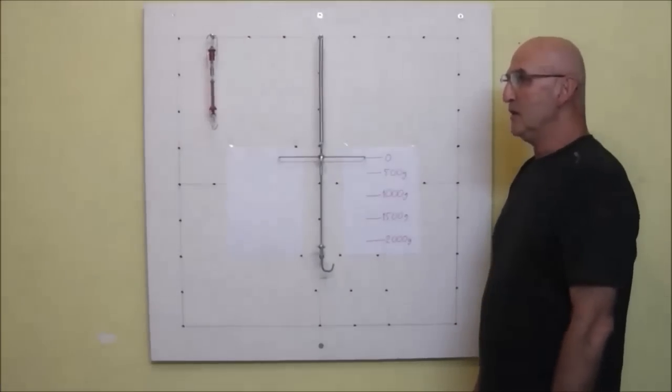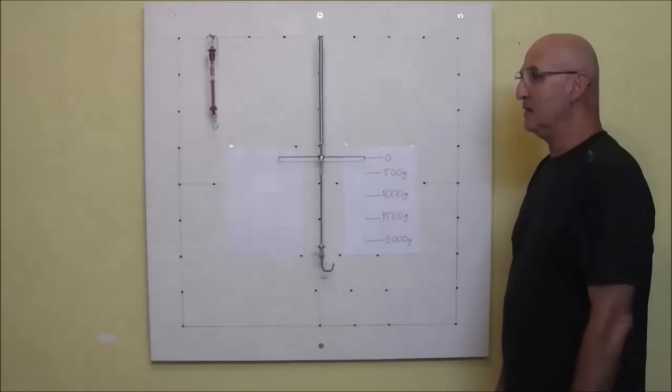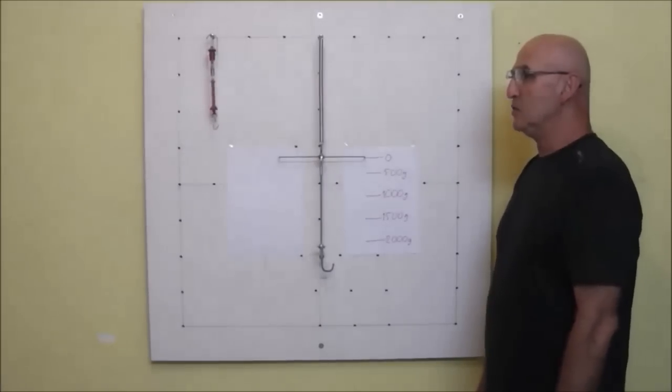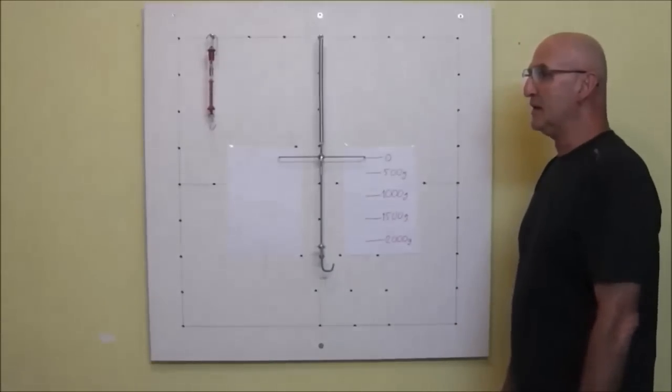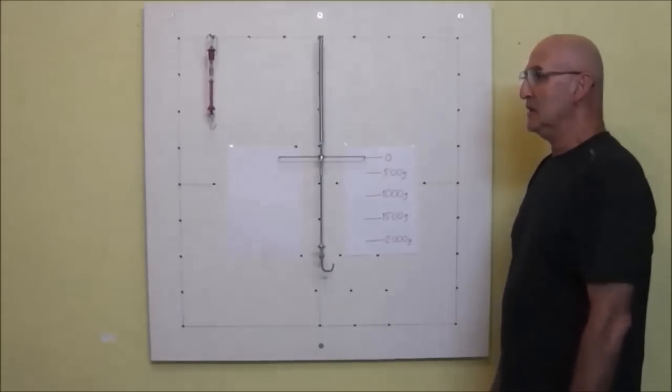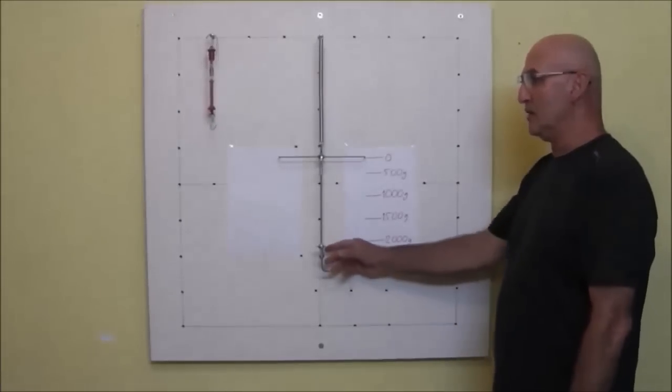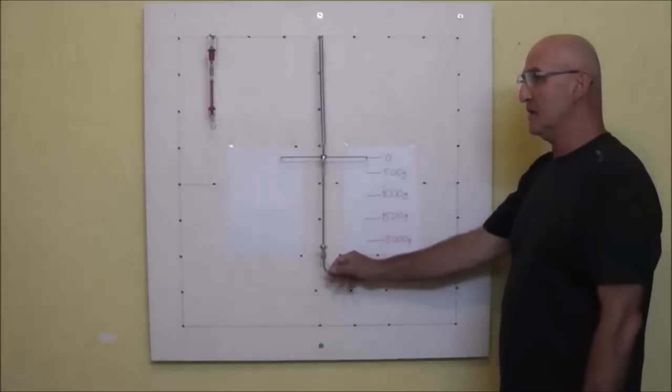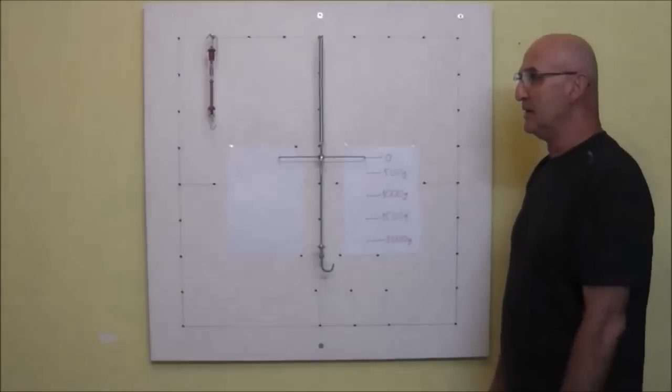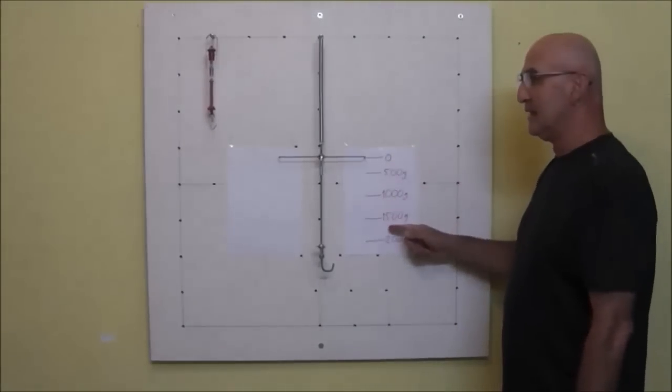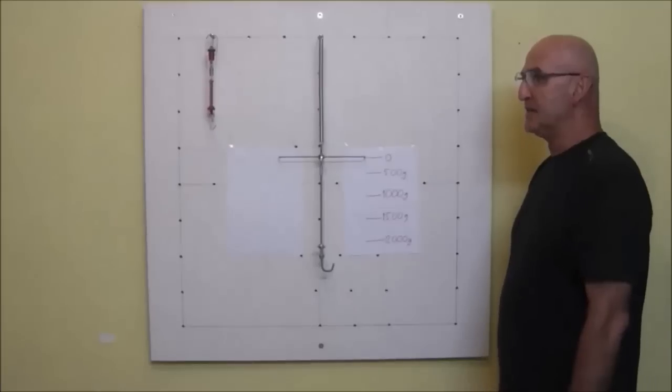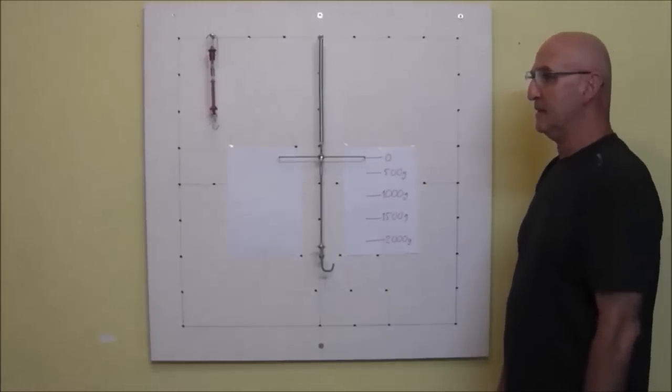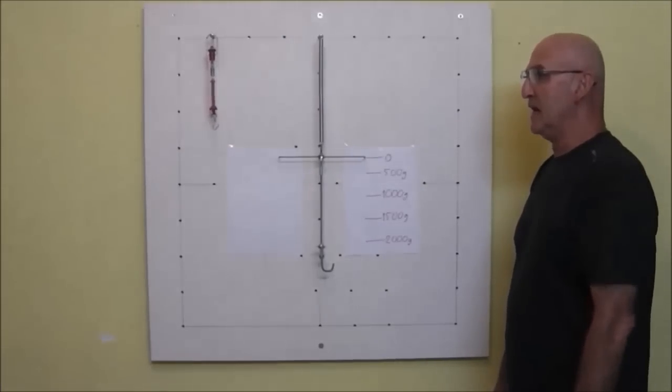Now, we can use the apparatus we have built to measure unknown weights between the limits of the working range of the spring. We hang the objects on the hanging hook and mark the respective pointer readings on the ready calibrated paper scale we have created in the former experiment. By this, we compare the unknown weight to our known calibrated scale in order to get the unknown object's weight.